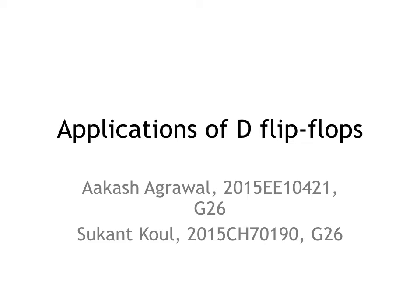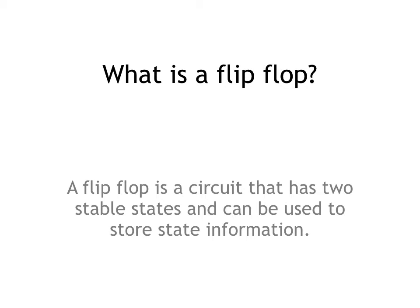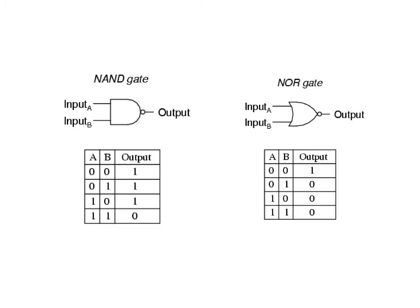Let's talk about D flip-flops. A flip-flop is a circuit that has two stable states and can be used to store state information. A flip-flop works by using NAND and NOR gates, which work according to the given truth table as shown on the slide.